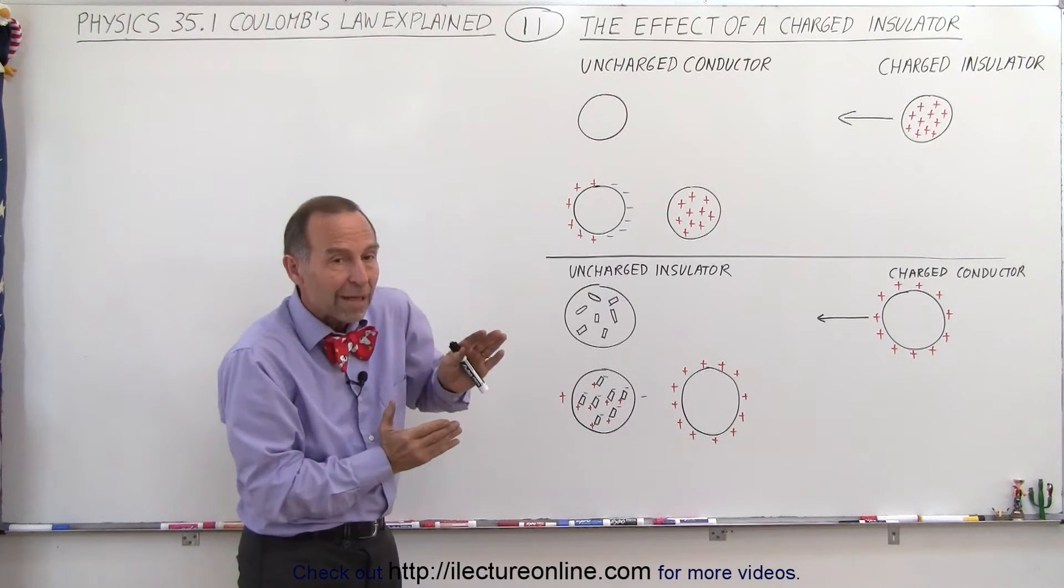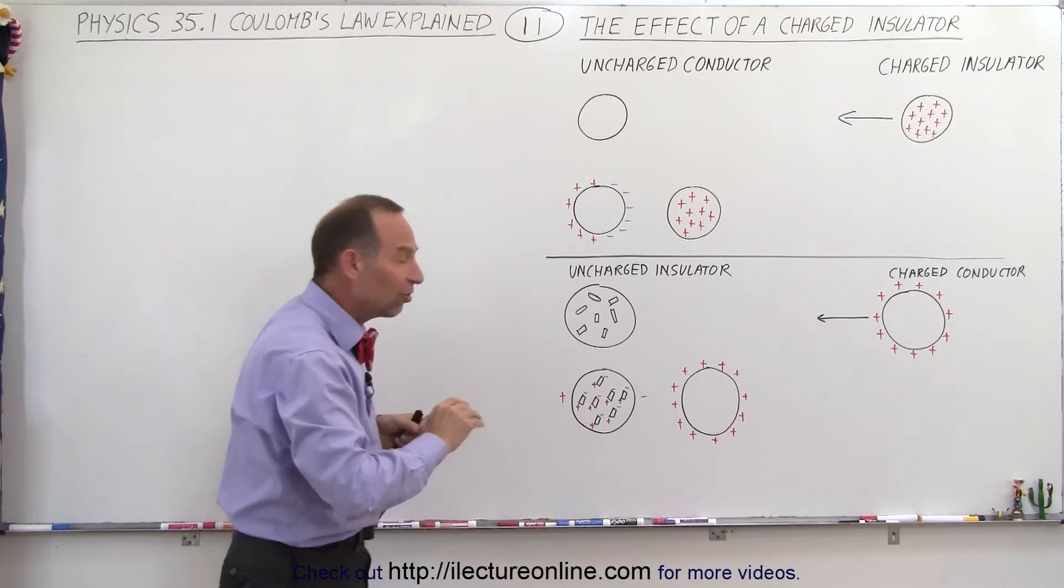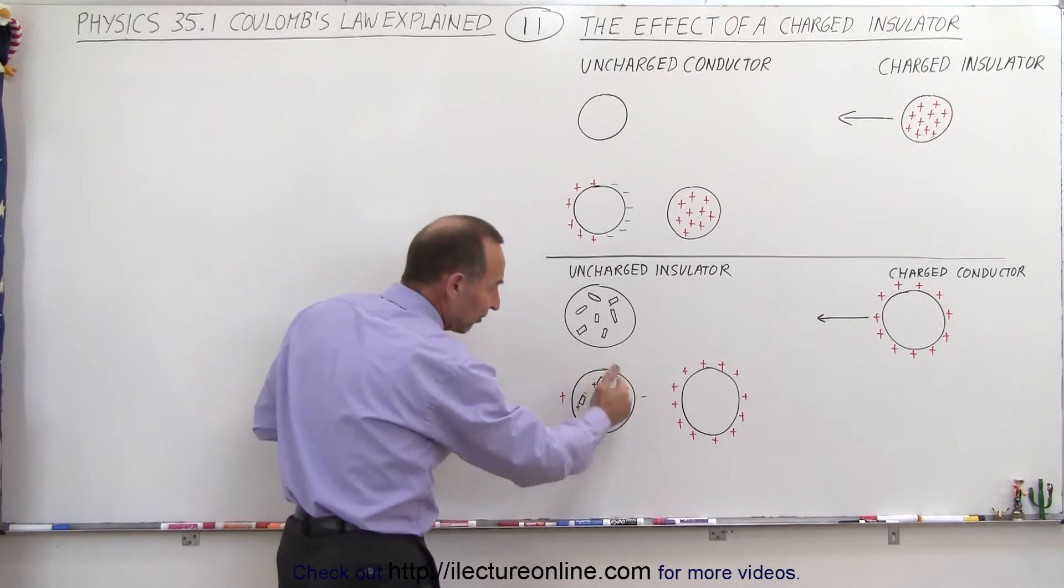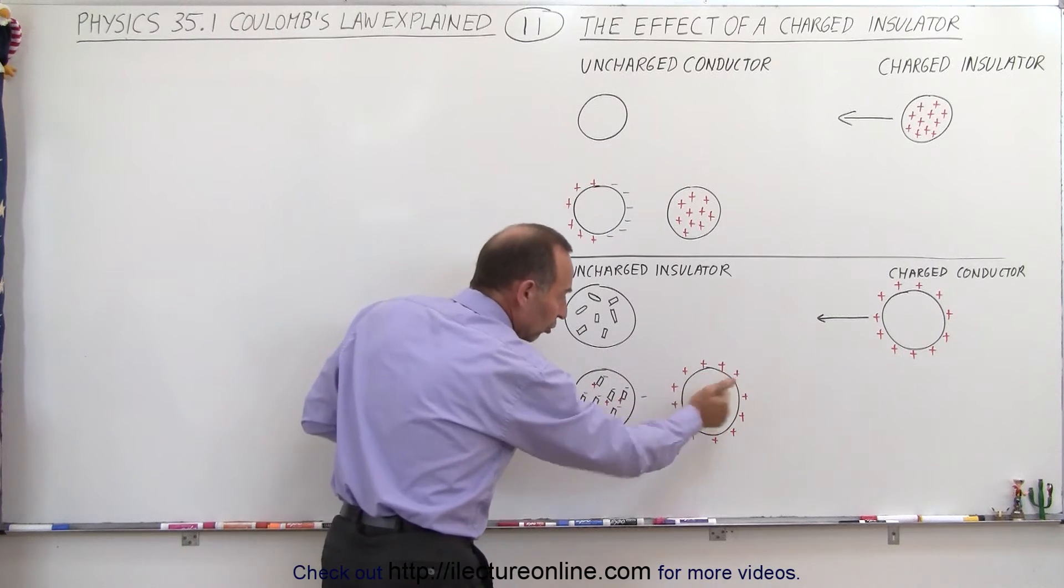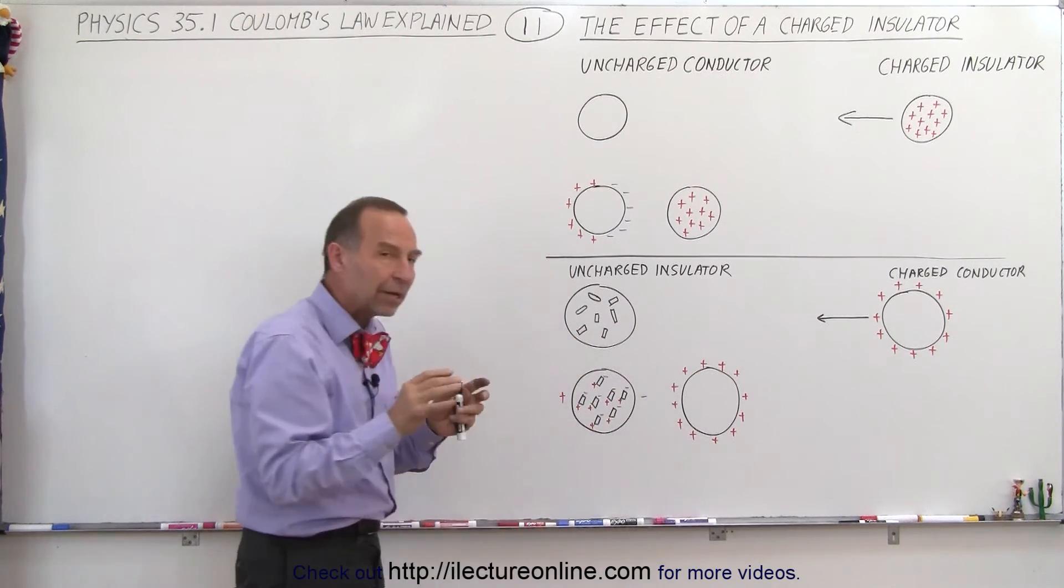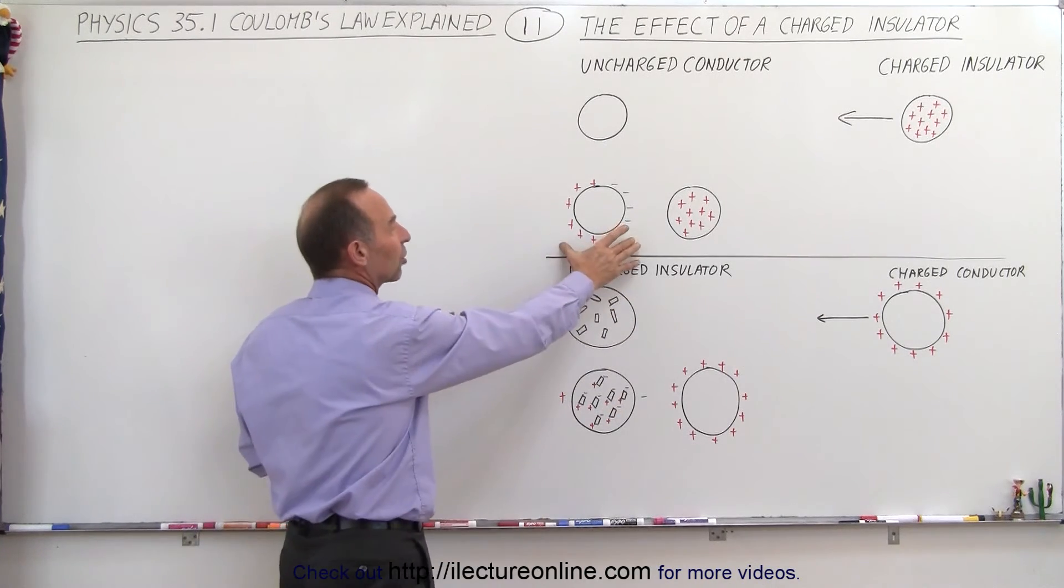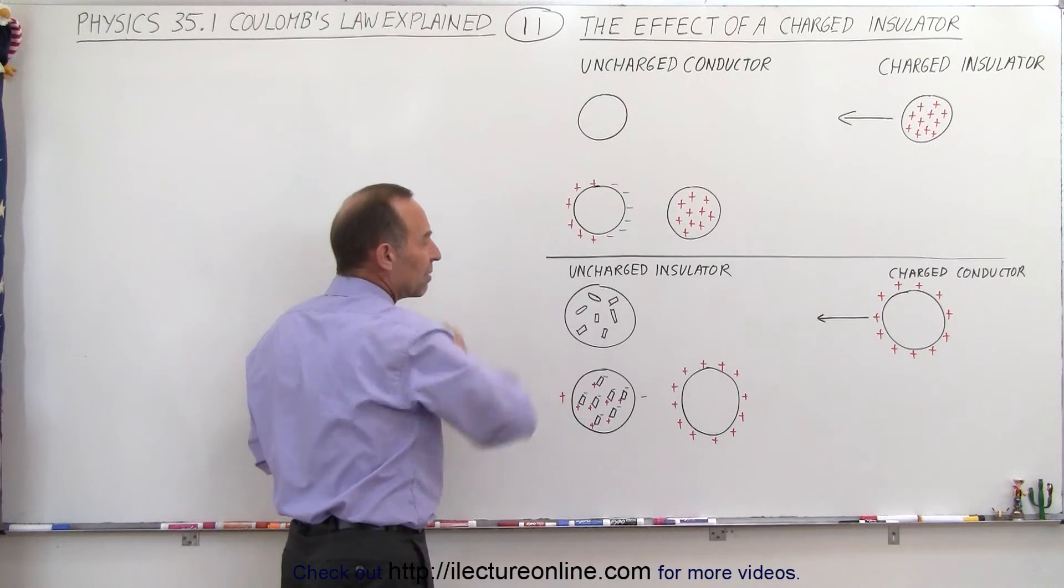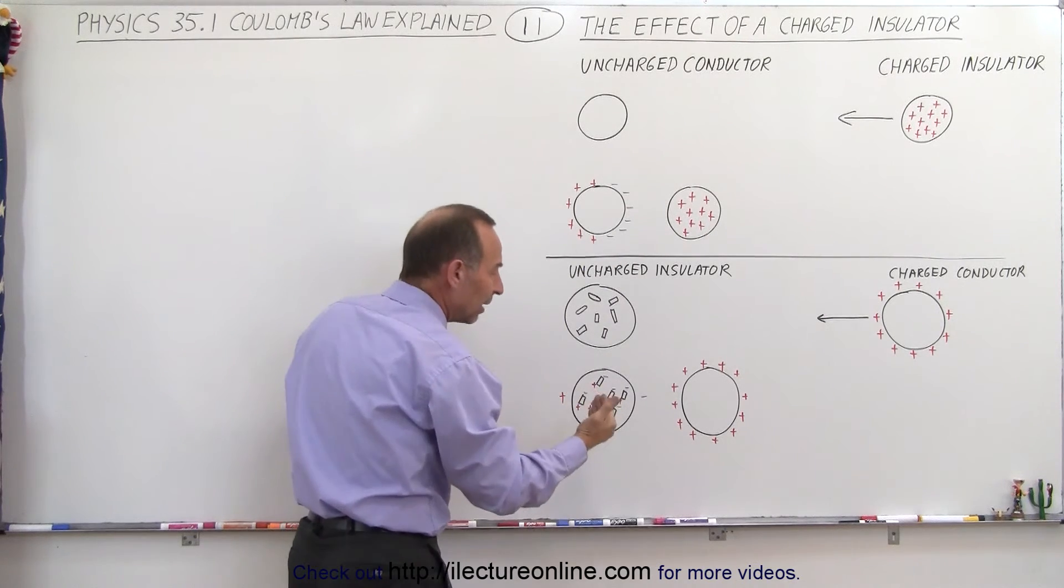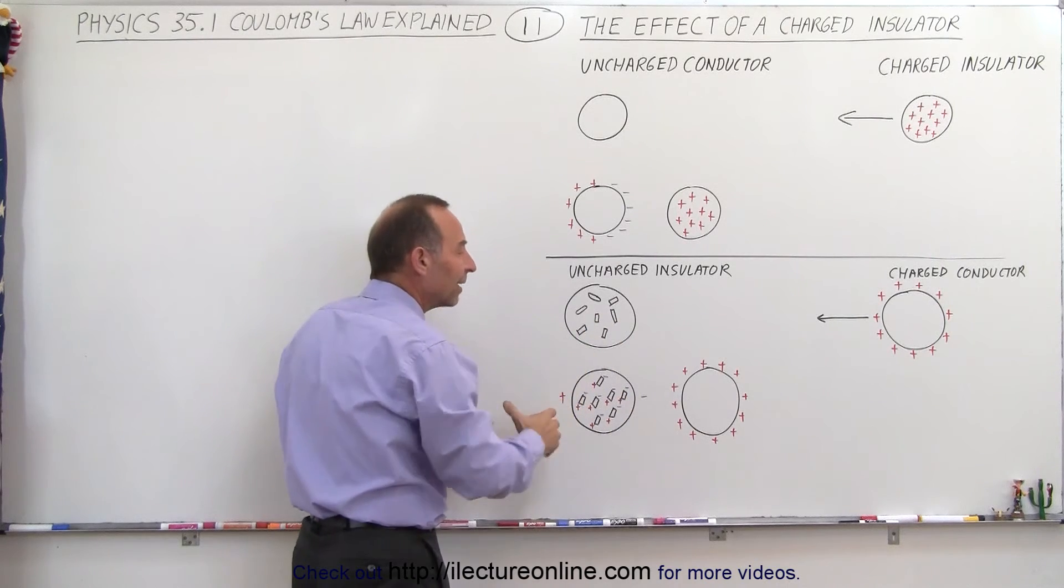So all the molecules tend to bend over a little bit towards making an alignment, such that on average, the negative sides are slightly closer to the charged object than the positive sides. The insulator becomes somewhat polarized to a small amount, not nearly as much as a conductor where charges can freely move.